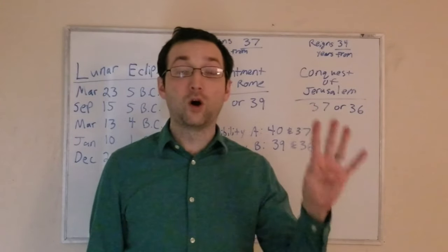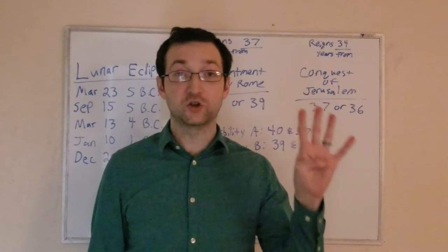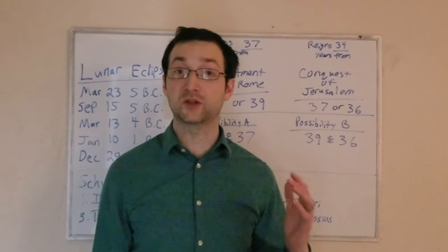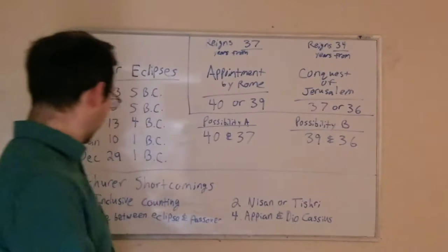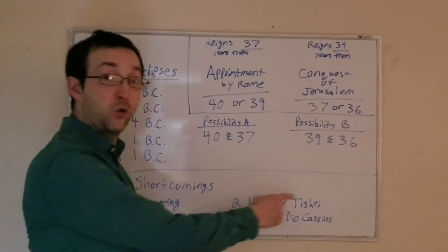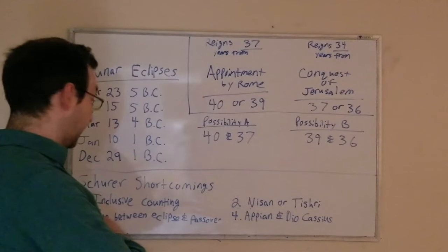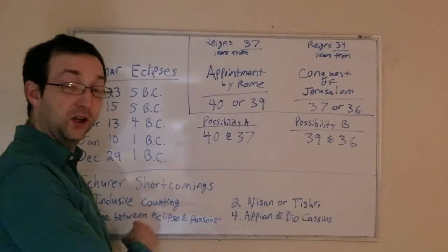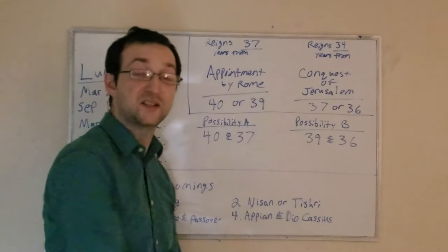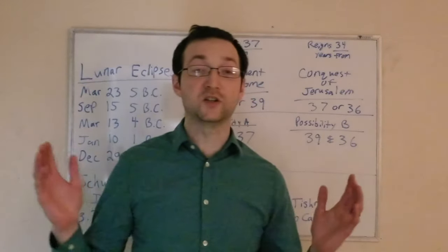Let's take a look at four major shortcomings in the Shurer Hypothesis. We will find the Shurer Hypothesis comes up short four different ways: its reliance on inclusive counting, Nisan or Tishri reckoning, the time available between the eclipse and Passover in the year of Herod's death, and the testimony of historians Appian and Diocasius. Let's consider each in turn.